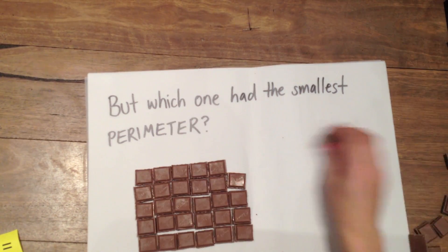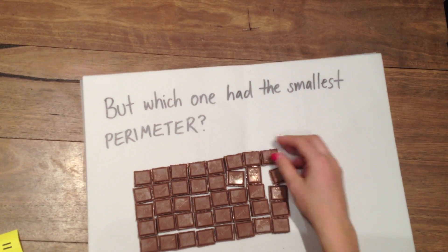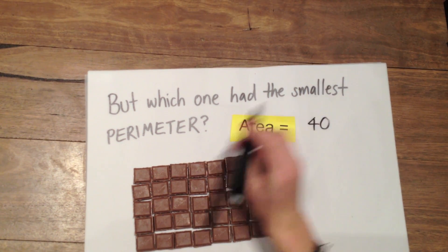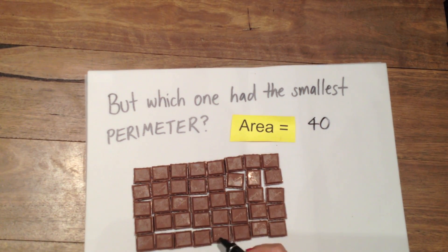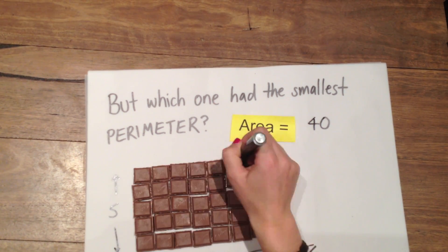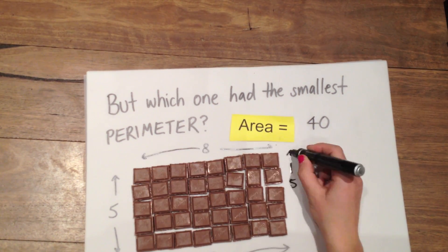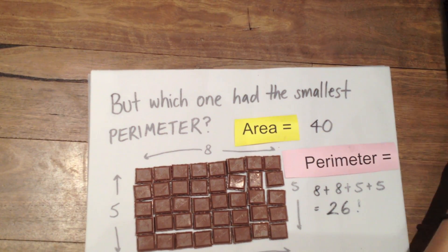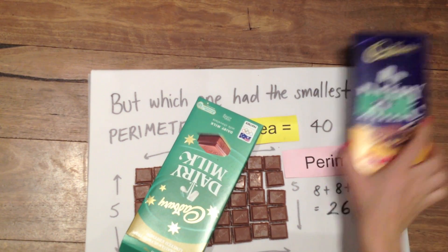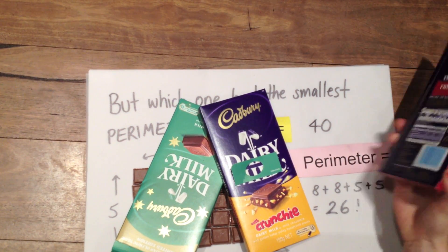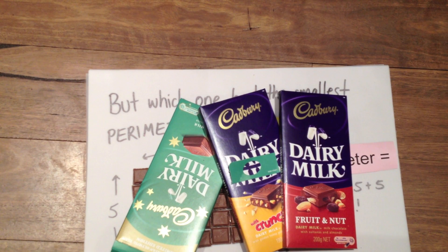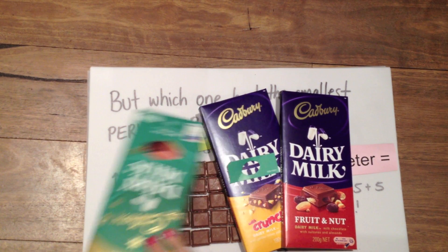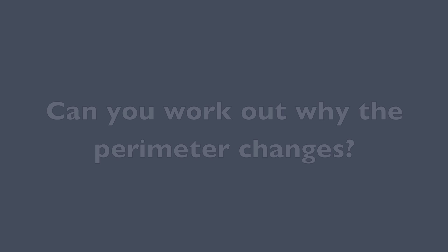But which one had the smallest perimeter? This one used 40 squares but had the smallest perimeter of 26. No wonder so many chocolate blocks look like this — they're much easier to pack. So there's our problem solved.